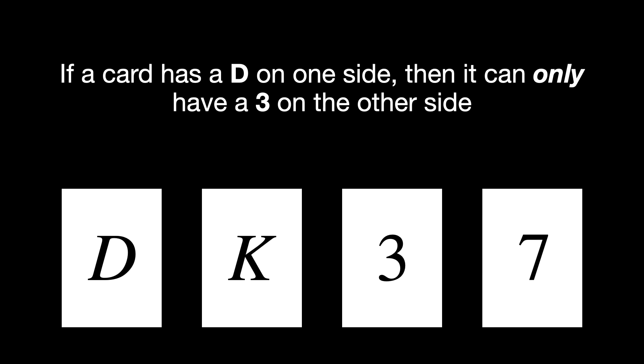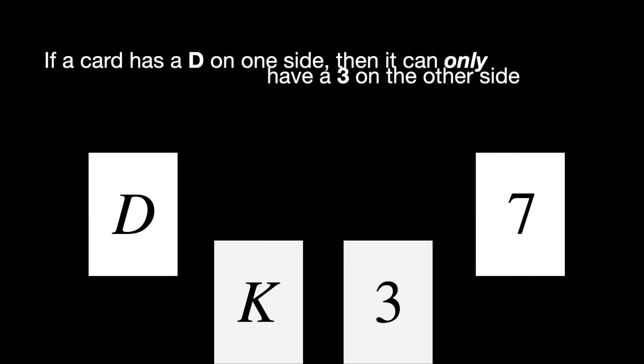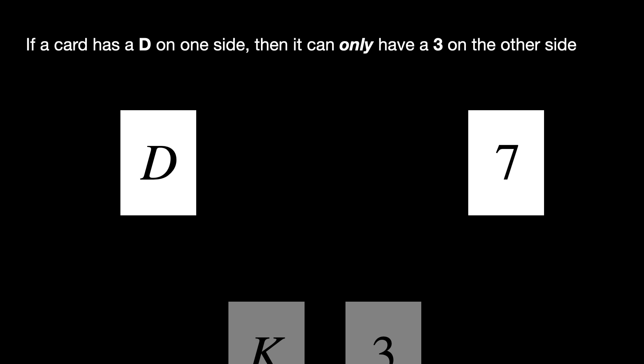The rule was simple. If a card has a D on one side, then it can only have a 3 on the other side. Your job is to flip the smallest number of cards needed to check if the statement is true or false. The logically correct choice is D and 7. The D checks for the expected 3, and the 7 checks that there isn't a D hiding on the back.